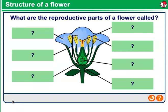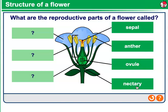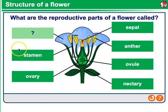Structure of a flower. What are the reproductive parts of a flower called? This structure is called the sepal. This structure is called the anther. The ovule is found below the sepal. The base is called the nectary. Here we find the ovary. The stamen supports the anthers, which is where pollen is going to be produced, and then of course there are petals.